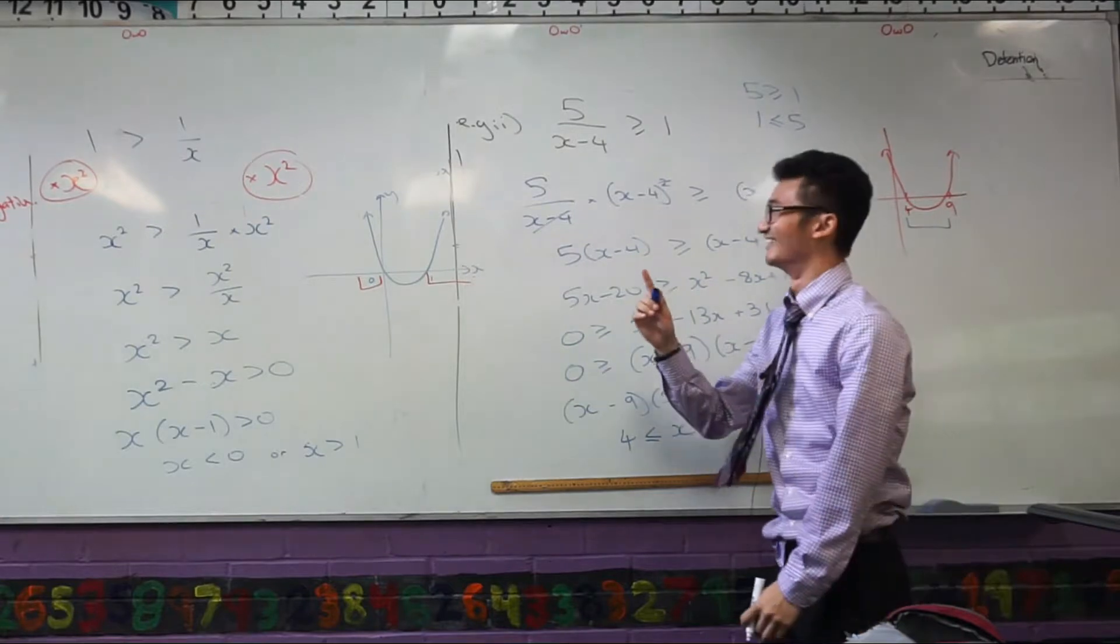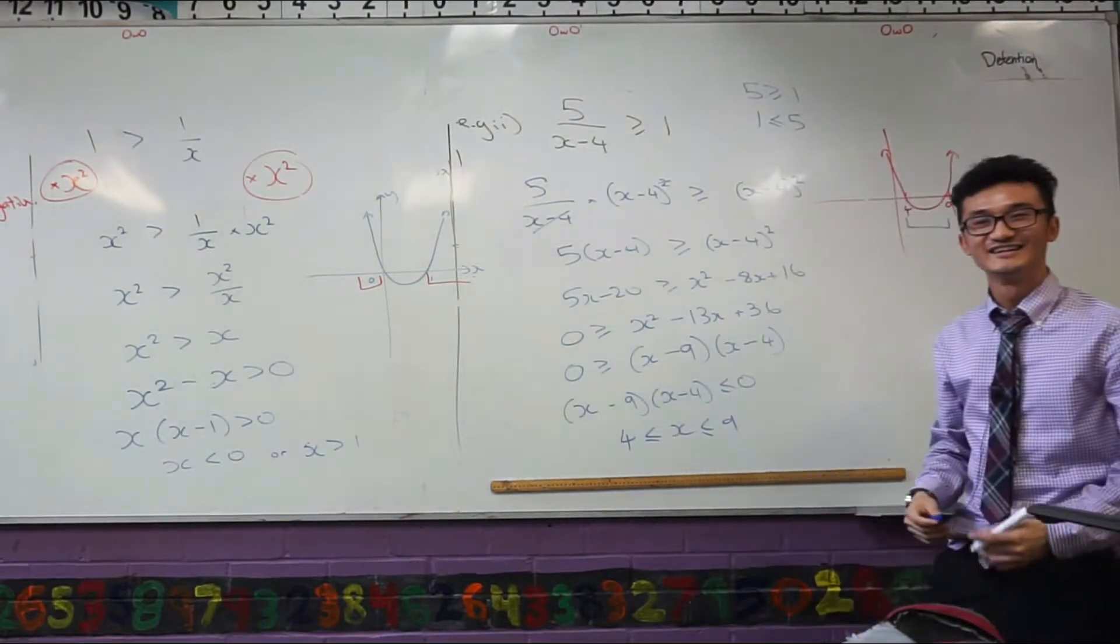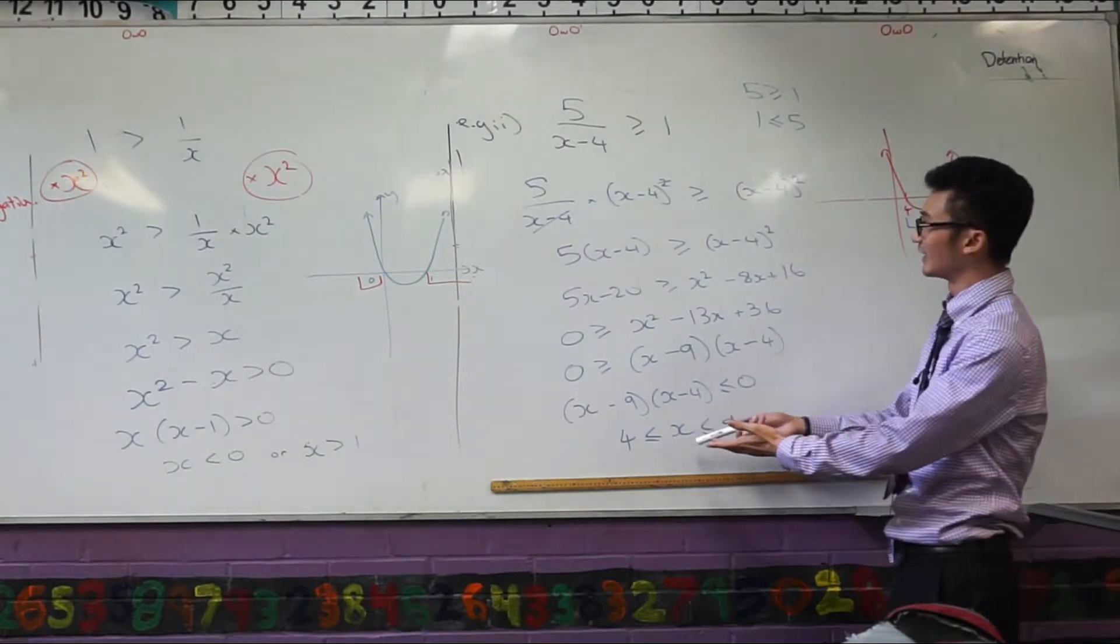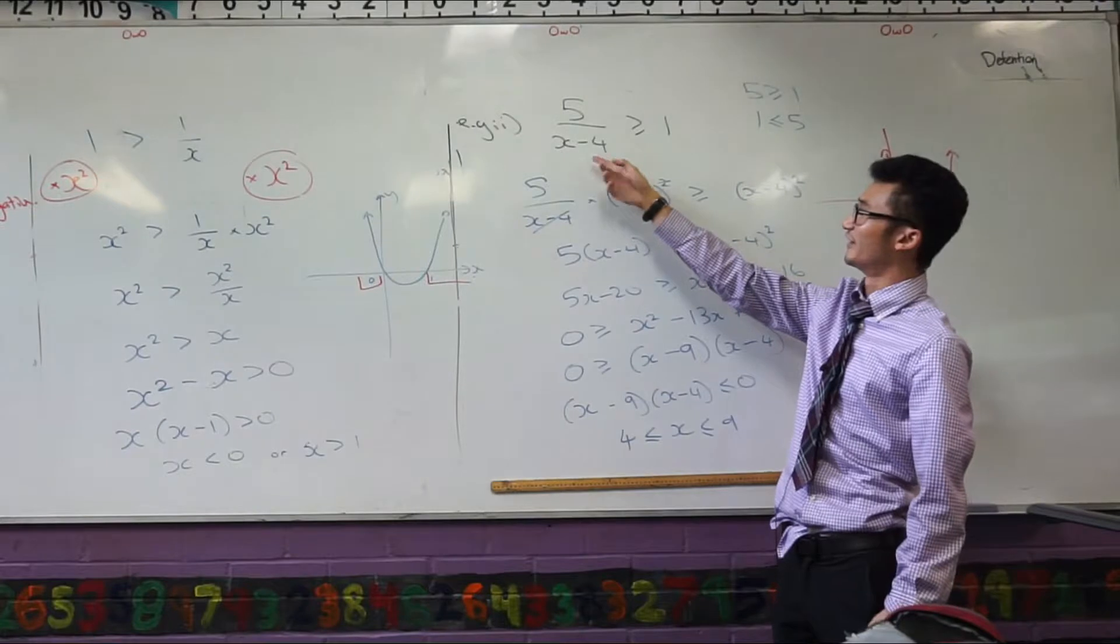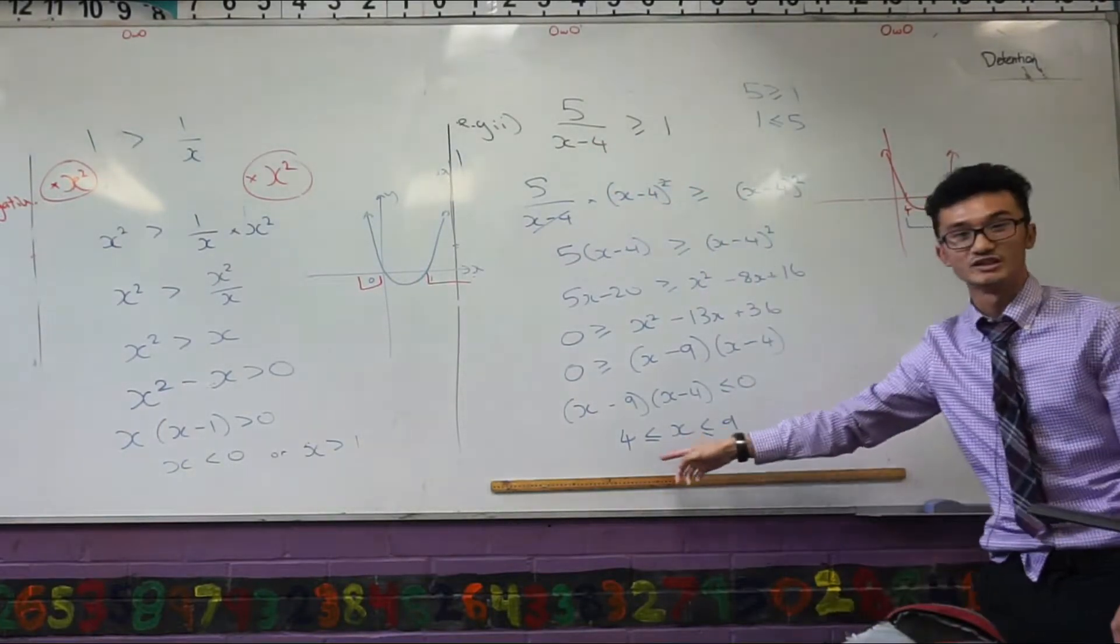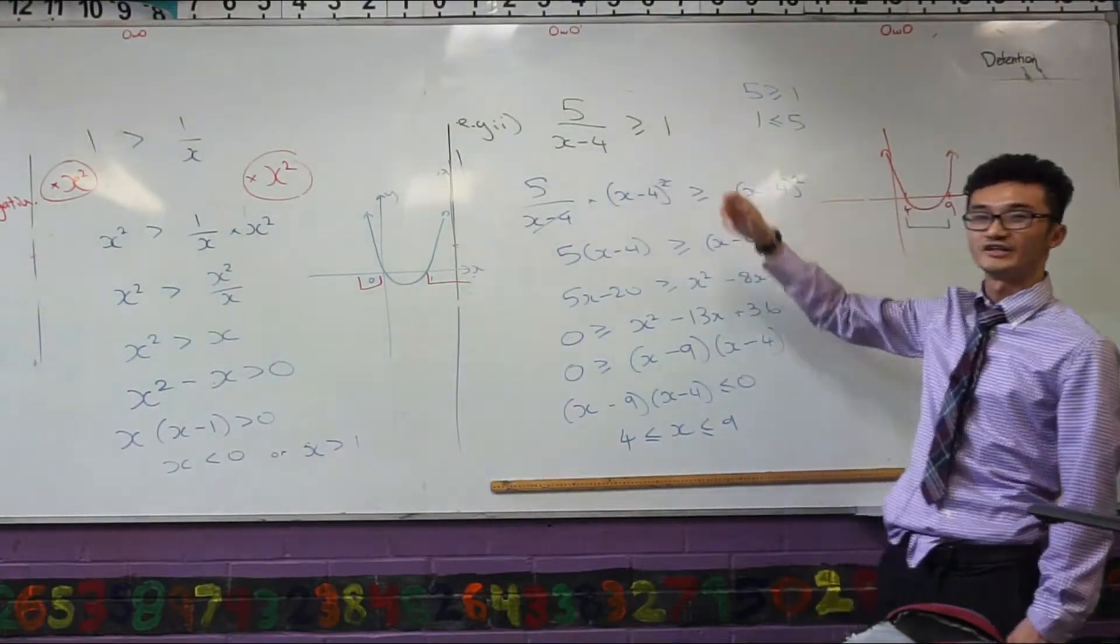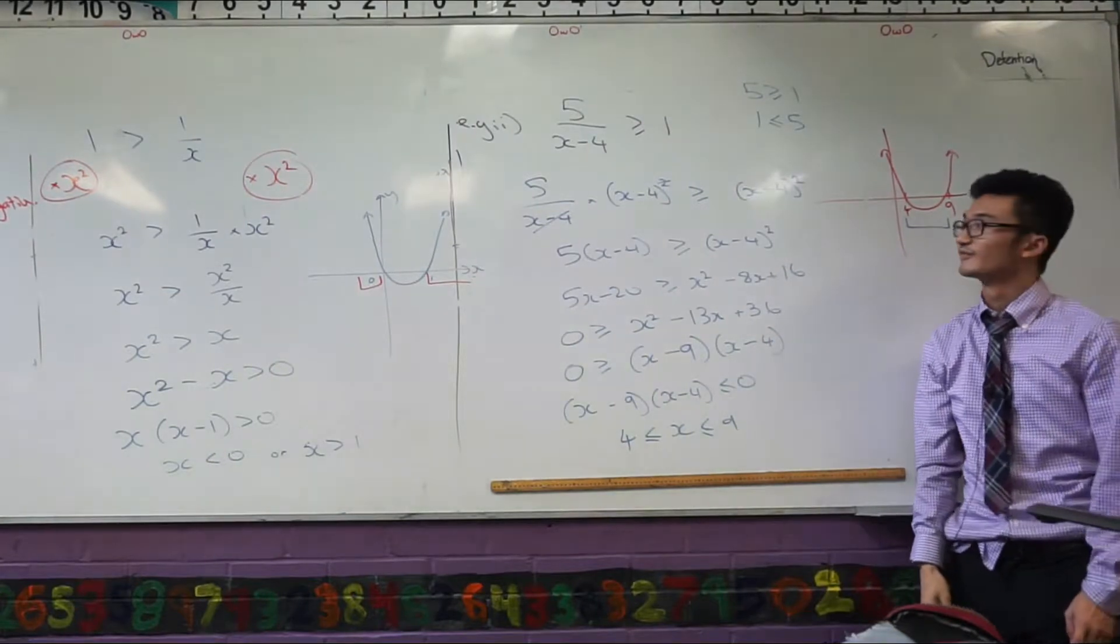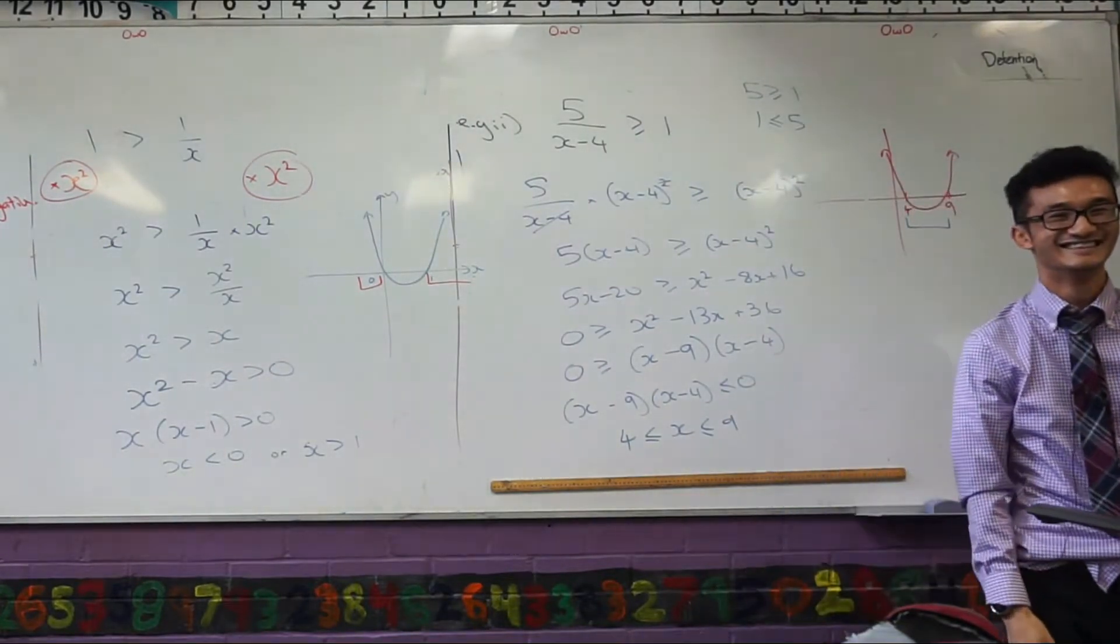But wait, I have to kind of break your hearts here, because this answer... You can test some values. Like, if I put in 5 here, 5 over 5 minus 4, that's just 5. And that's bigger than or equal to 1. You can test any numbers within this range, like 9 even, on the edge. 5 over 9 minus 4, that's 5 over 5. That's bigger than or equal to 1.